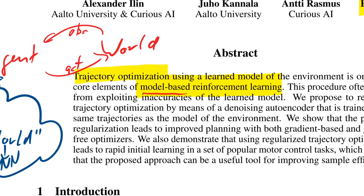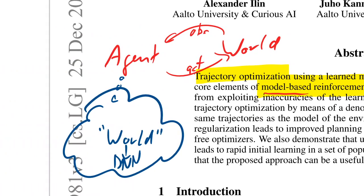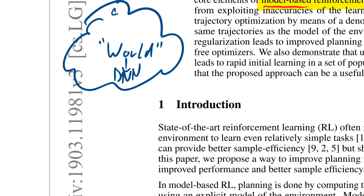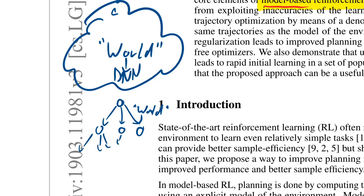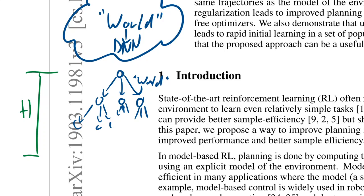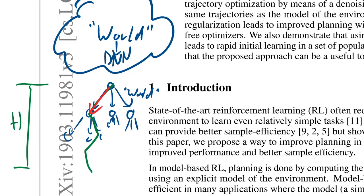Trajectory optimization means you now have this world model and you use it to look ahead. You are in a state, you can do three different actions, and you use your world model to see how the world will react. You get into three different states, then consider three actions from each, and so on — building a planning tree over a planning horizon H. Ultimately you find the best path through this tree and take that as your first action.